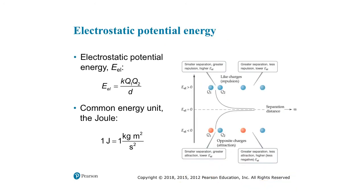Electrostatic potential energy is one way we can think of the energy of particles in terms of their charges. If you have two positively charged particles, they're going to repel and go upwards in energy. If you separate the particles, they sort of have zero relative energy. So as you bring particles together, they start increasing in their relative energy due to repulsion if they have the same charge.